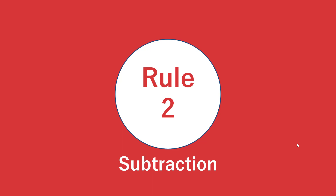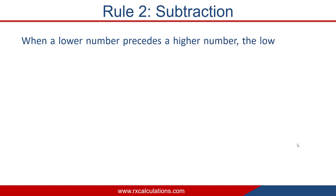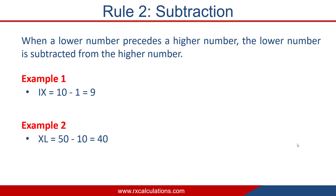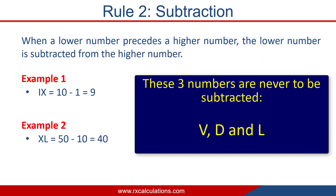The next rule is the rule of subtraction. It states that whenever a lower number precedes a higher number, the lower number is subtracted from the higher number. For example, IX: I is 1, precedes X which is 10, and I is lower than X. So 10 − 1 = 9. Another example: XL — X is 10, L is 50, X precedes L, so 50 − 10 = 40. It's important to note that V, D, and L are never to be subtracted from greater numbers.